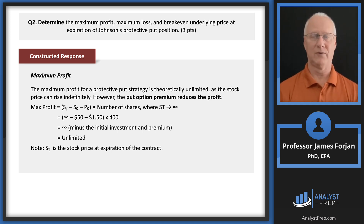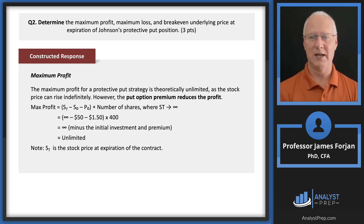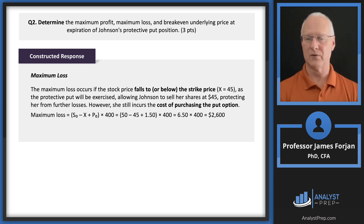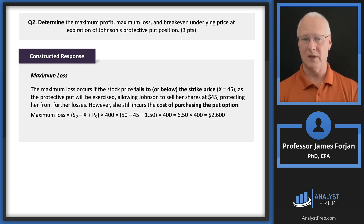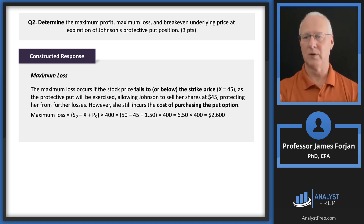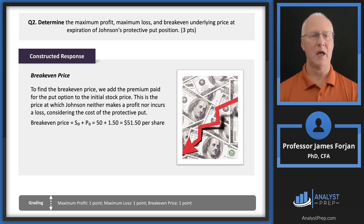This is one of those things that doesn't quite make literal sense — you never see a stock price at infinity — but the answer is unlimited. Maximum loss: take the difference between the stock price and the exercise price, which is that floor, then add the premium because you're buying the put option. So that's $50 minus $45 plus $1.50, which comes out to $6.50, times 400 shares — that's $2,600. And then the break-even is just the stock price plus the cost of the premium: $50 plus $1.50, so $51.50.